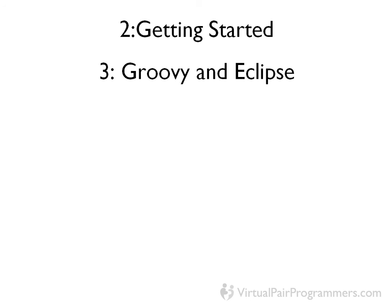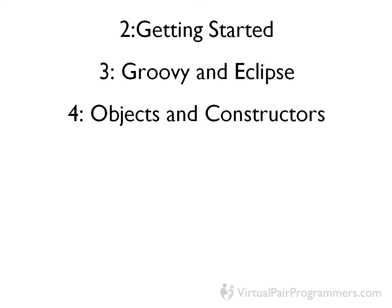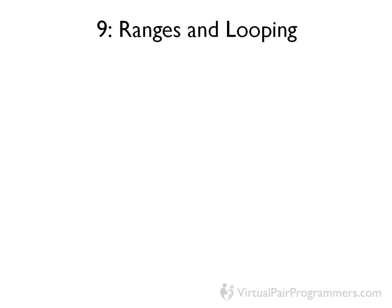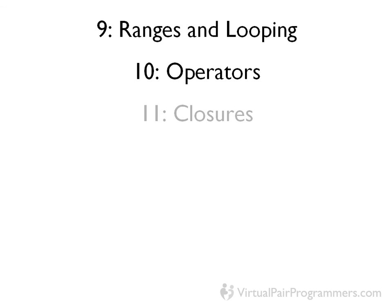Then we're ready to start Groovy coding. Chapter four covers objects and constructors. Chapter five looks at dynamic typing in Groovy. Chapter six looks at methods in Groovy, and chapter seven looks at exceptions. In chapter eight we'll look at strings, and in chapter nine, ranges and looping. Chapter 10 looks at operators, including operator overloading. And in chapter 11, we introduce one of the important features of Groovy, which is called closures.